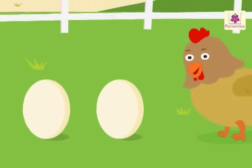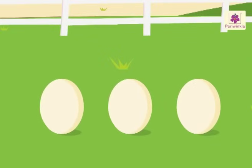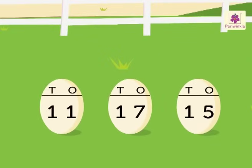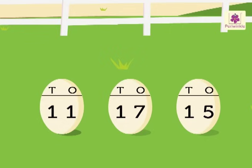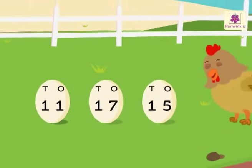Look at the eggs. Each egg has a number written on it in the form of tens and ones. The numbers are 11, 17, and 15. Let's arrange 11, 17, 15 in descending order with the help of Daisy, the hen.